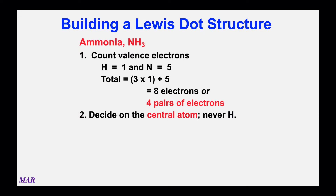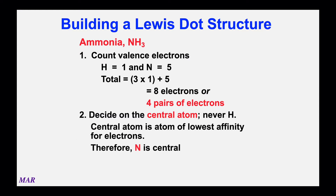The next step is to decide what the central atom is. The central atom will never be hydrogen — it's usually the first atom listed. Just as CO2 is always written CO2 and not O2C, there's a reason for the ordering. In ammonia, nitrogen is first and we know it's the central atom because hydrogen can never be the central atom.